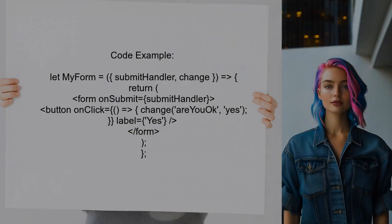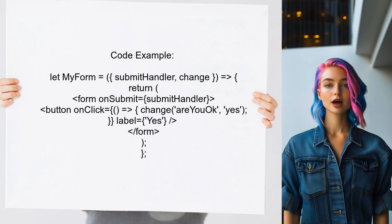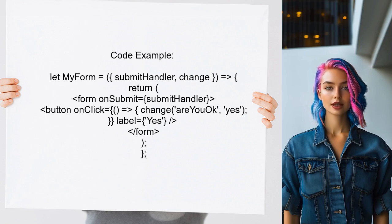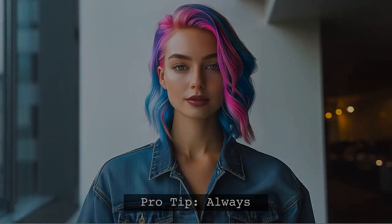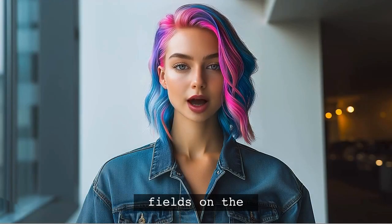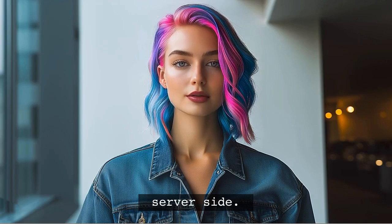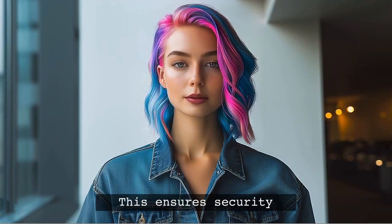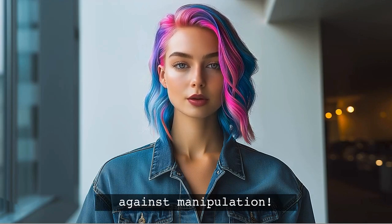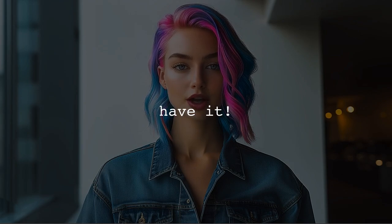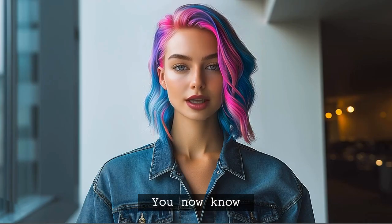In the provided code, the MyForm component uses the change function to set the value of 'are you okay' to 'yes' when a button is clicked. This works regardless of whether you've set initial values. Here's that great tip I promised: always validate your hidden fields on the server side as well. This ensures that even if someone tries to manipulate the form, your application remains secure.